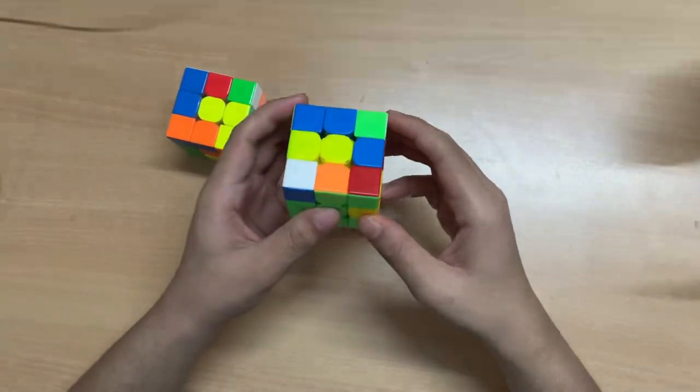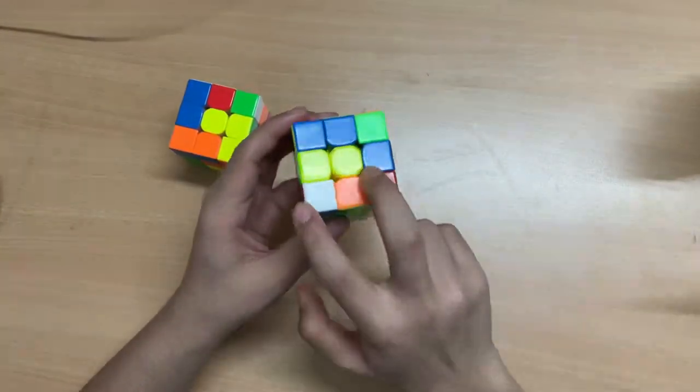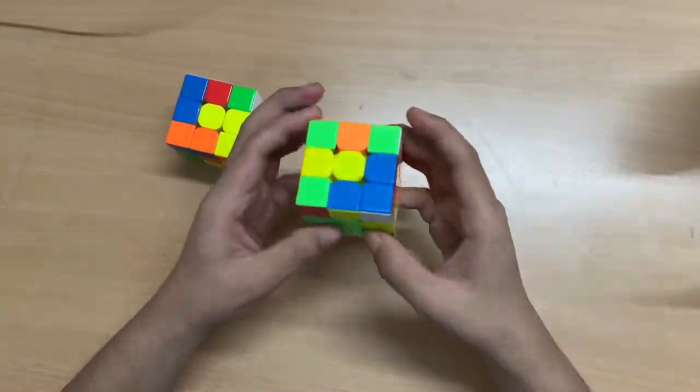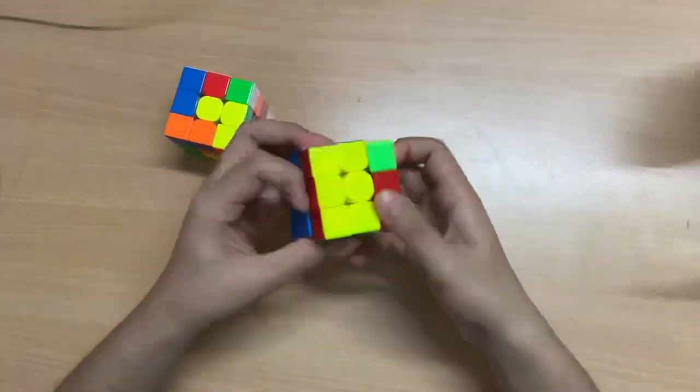Then I solved this pair and here I was deciding between these two. So that probably made my solve a little slower, but I went for this, like that, insert in the back, rotate, this and then PLL skip.